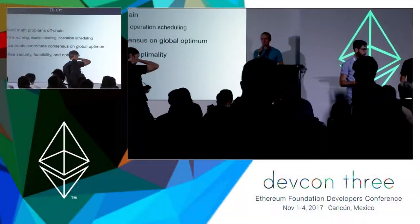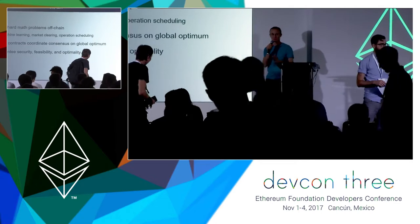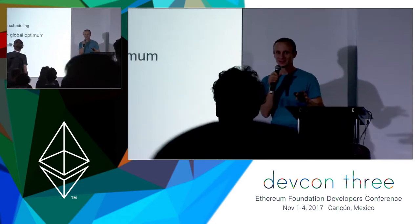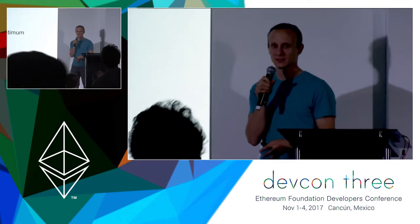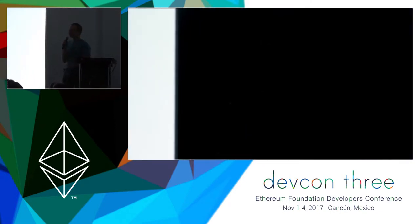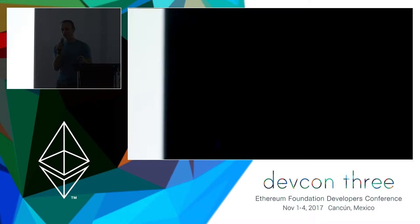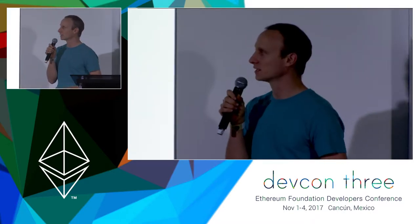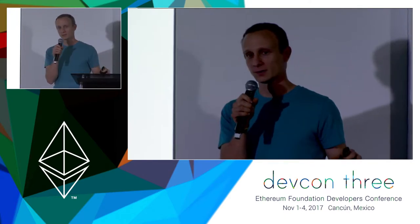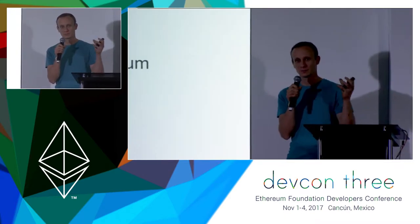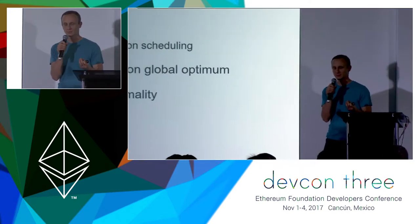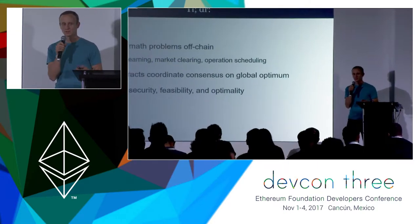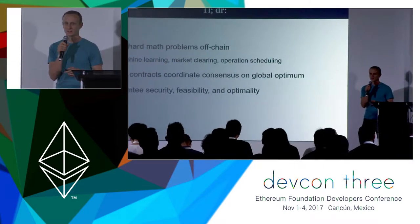So if you're debating whether to be in this room or up in the main hall, we can cut to the chase. The topic of my talk will be discussing how to solve hard math problems off-chain. How can we actually address problems in machine learning, market clearing, operation scheduling? How can we use smart contracts to bring those problems into consensus on a global optimum? And then how can we guarantee security, feasibility, and optimality of this type of problem?